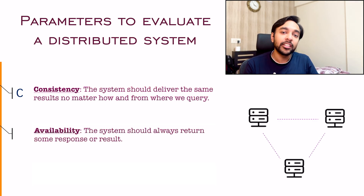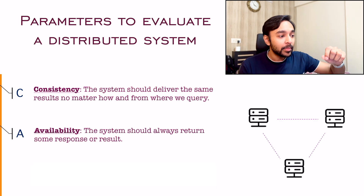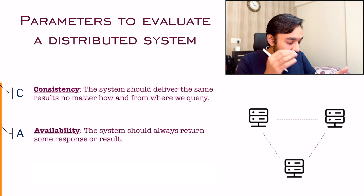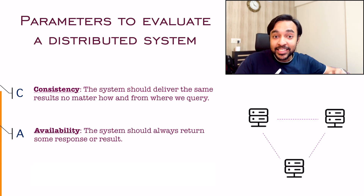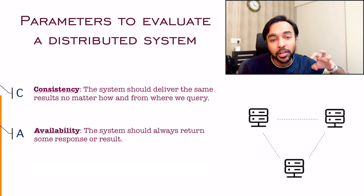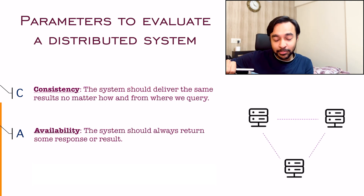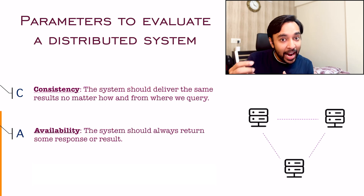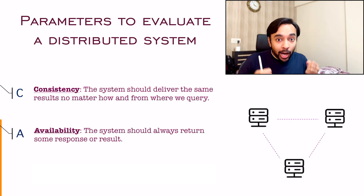The next metric is availability. It simply means that whenever you query the system, you should get back some result. It should not be a case where you send a request and just sit there idle without getting any response. Think about a bad performing website where you keep clicking and nothing happens — that system is compromised on availability, and that is not a good design. Systems like Instagram, WhatsApp, or Twitter are always available, and that gives you a better experience. So availability is a very big metric when you define how good your system is.